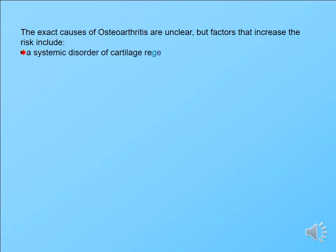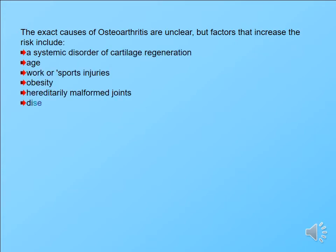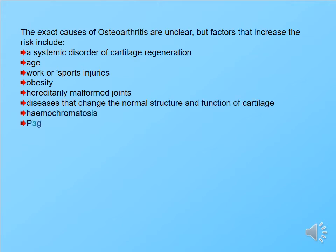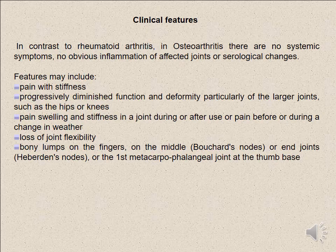The exact cause of osteoarthritis is unclear, but there are risk factors that lead to it: systemic disorders of cartilage regeneration, age, work or sport injury, obesity, predatory femoroacetabular joint disease, diseases that change the normal structure and function of cartilage, hemochromatosis, and blood disorders. All of these can lead to osteoarthritis.